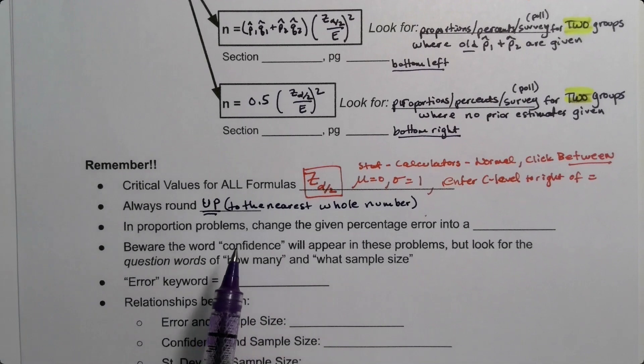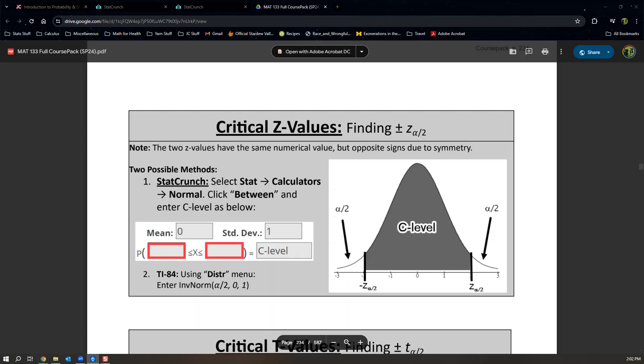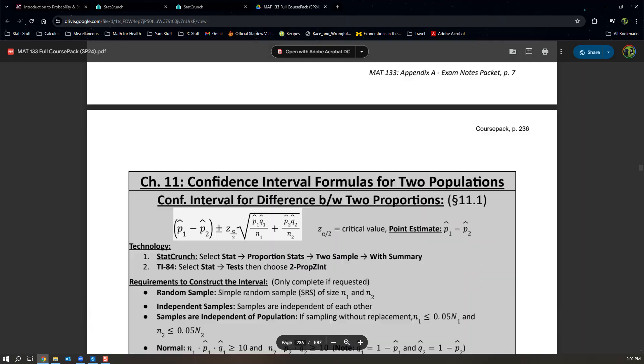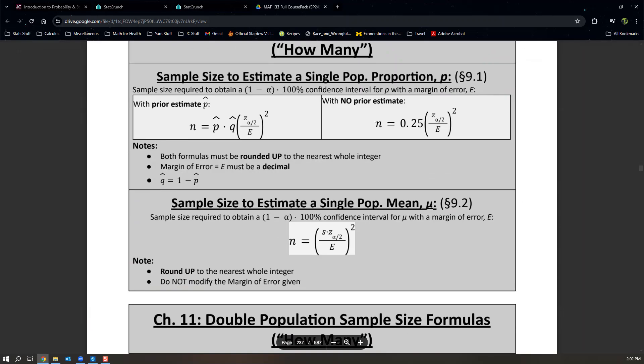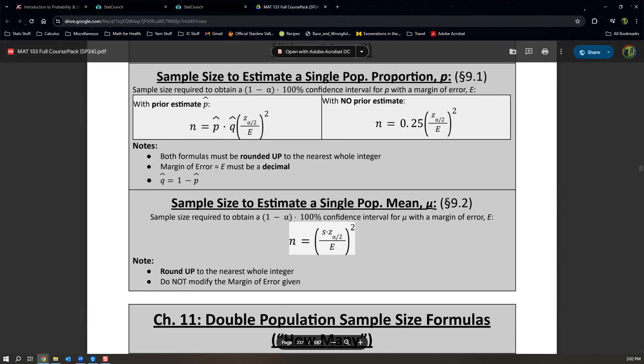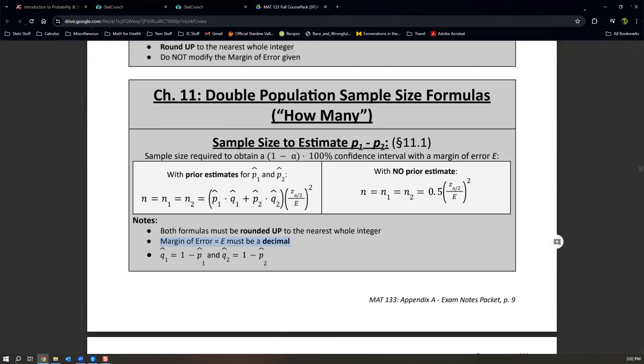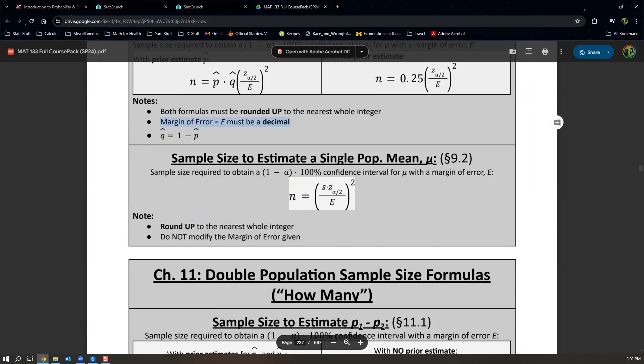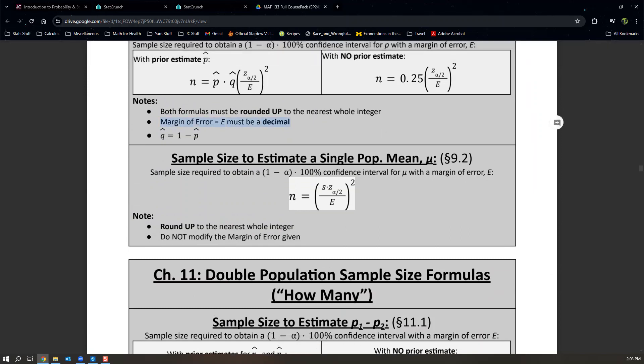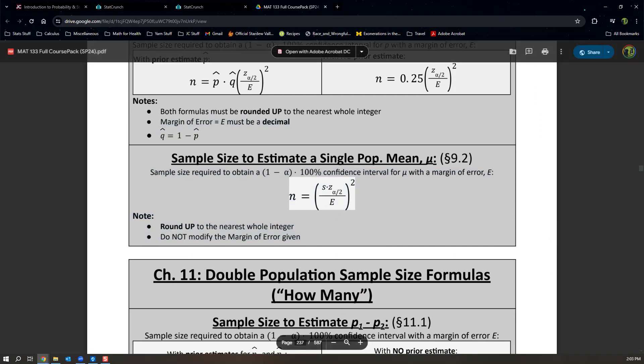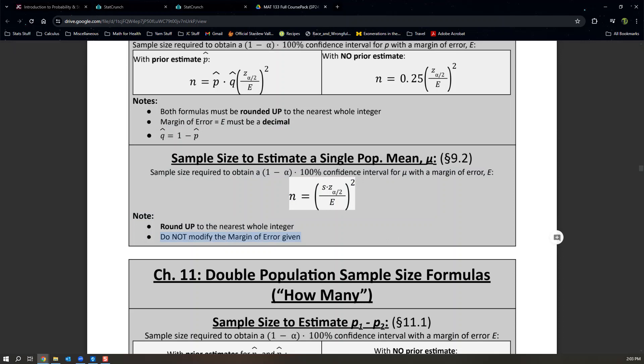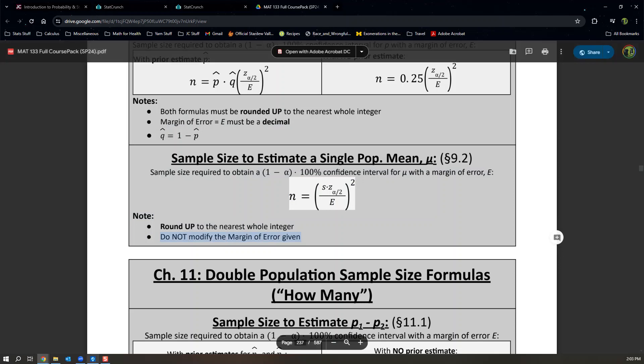Now, one other piece, and I think it's a little subtle, so I might add this into the exam notes packet. But the sample size questions for proportions, like these two at the top and these two at the bottom, it is very common for the error to be given as a percent, and then you have to change it to a decimal. That is not the case for the middle one. It says do not modify the margin of error given. I even wrote it as a note.